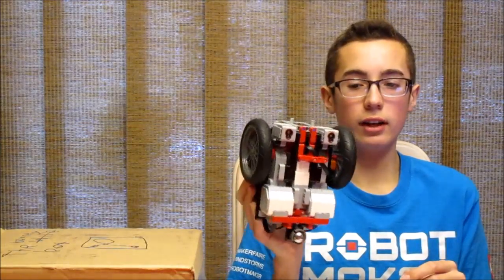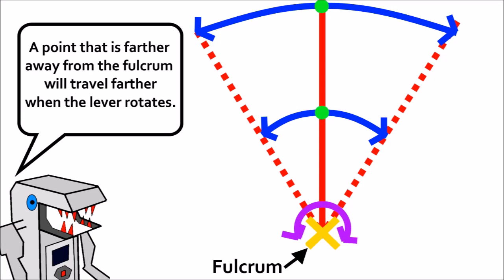So when the robot turns as it's line following, this is going to be the point around which it pivots. Now, if you have a short distance between this pivot point and the color sensors, your color sensors aren't going to move as far when your robot turns during its line following.